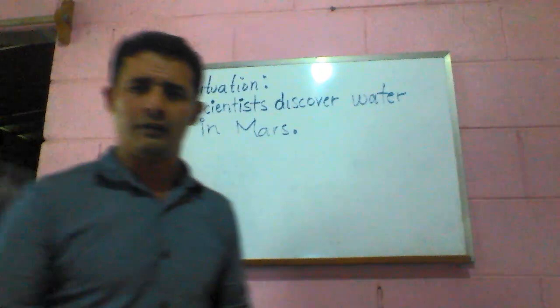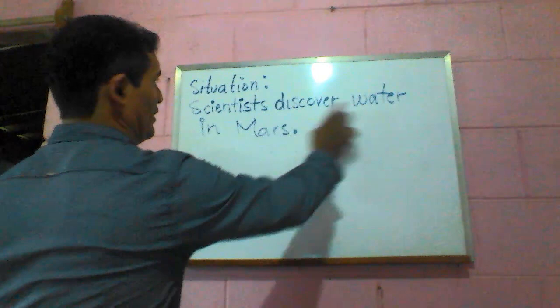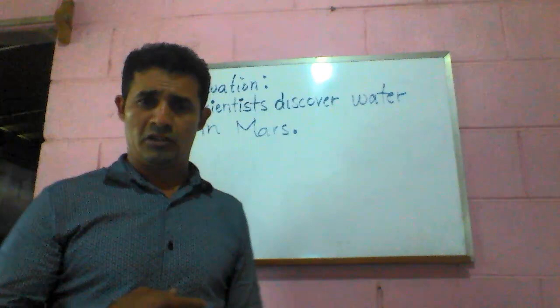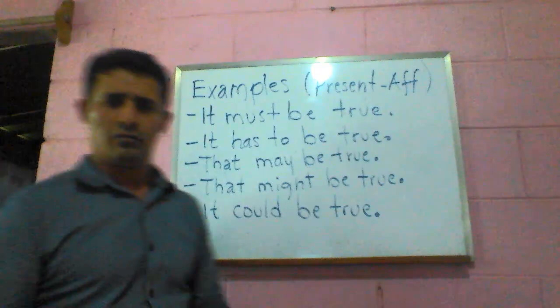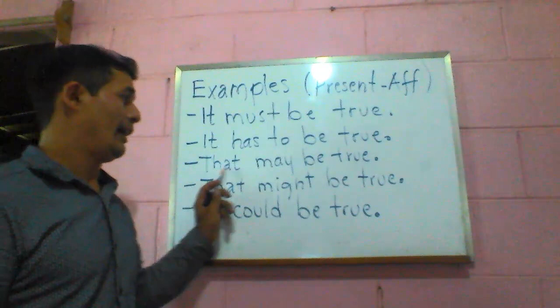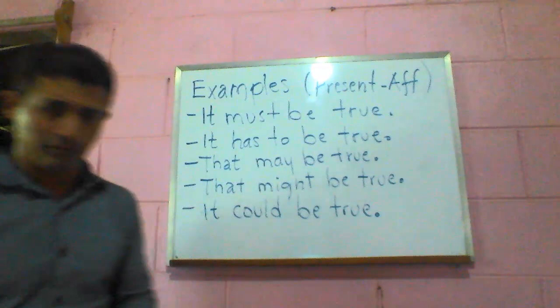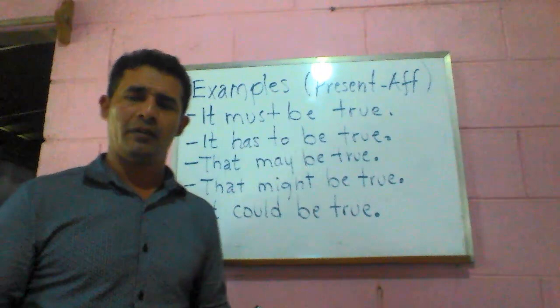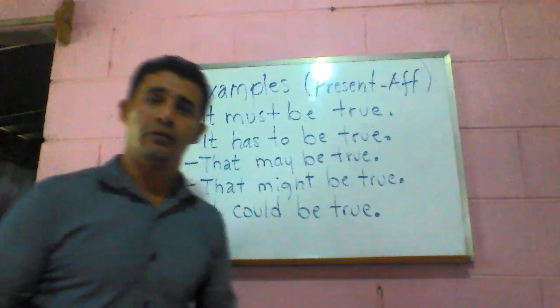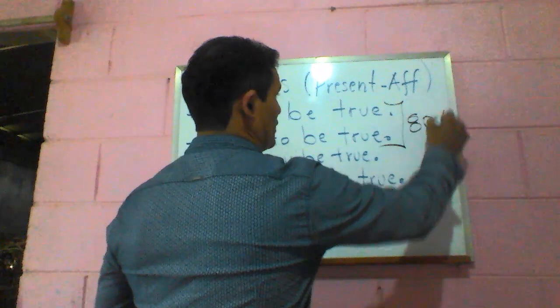Here I have a situation: a scientist who discovered water on Mars. Now I am going to speculate about that. I have some examples: it must be true, it has to be true, that may be true, that might be true, it could be true. Here you choose a specific modal verb in order to speculate about the present.